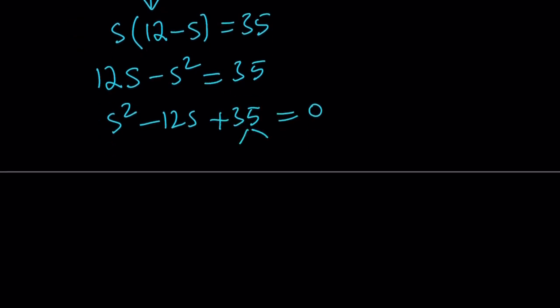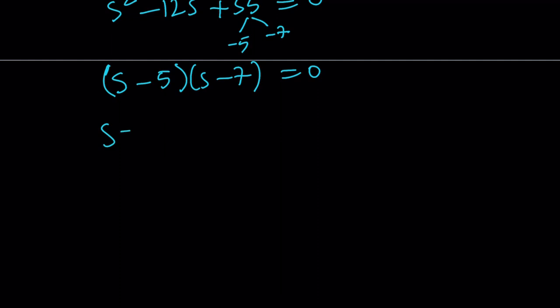s squared minus 12s plus 35 equals 0. Now we're looking for two numbers whose product is 35 and their sum also need to be negative 12. And those numbers are negative 5 and negative 7. Now we can write this as s minus 5 times s minus 7 equals 0, which means s is either 5 or 7.